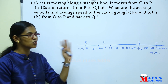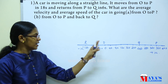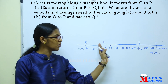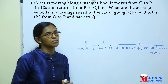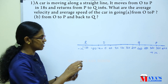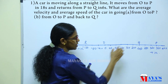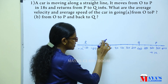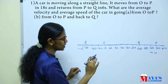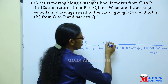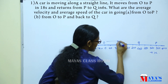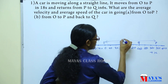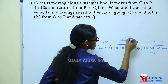A car is moving along a straight line. The initial point is O. It moves from O to P in 18 seconds.